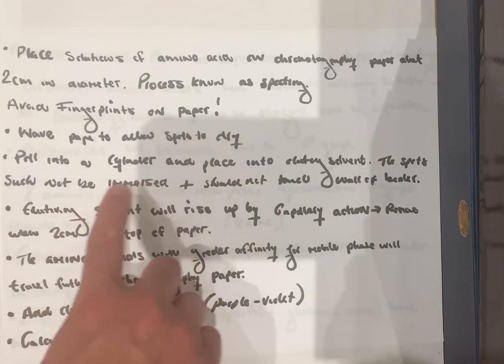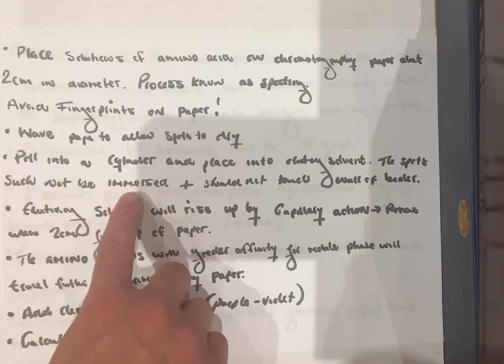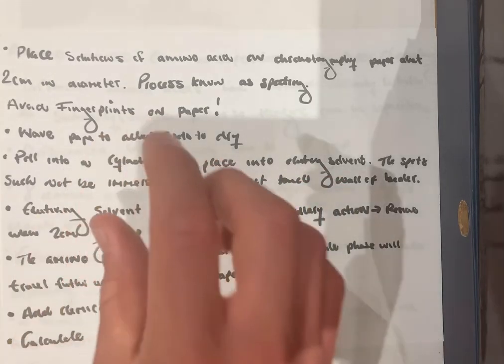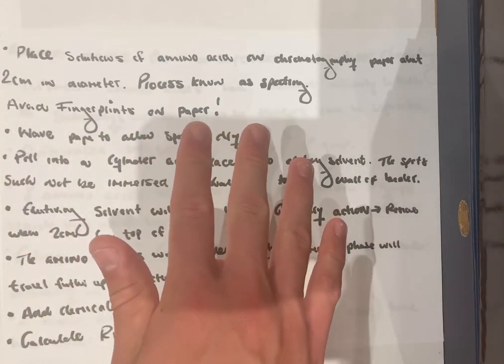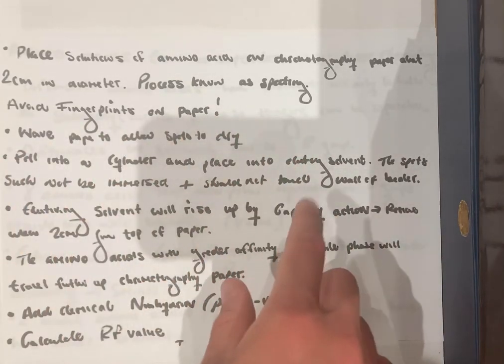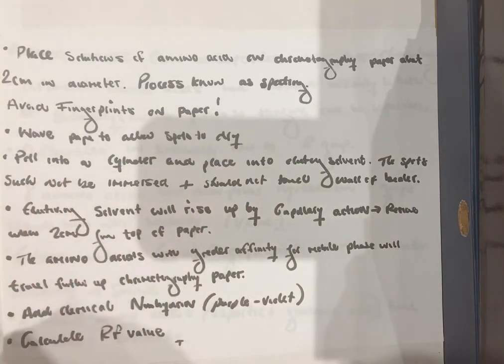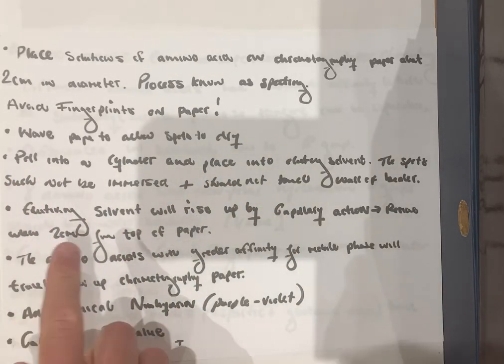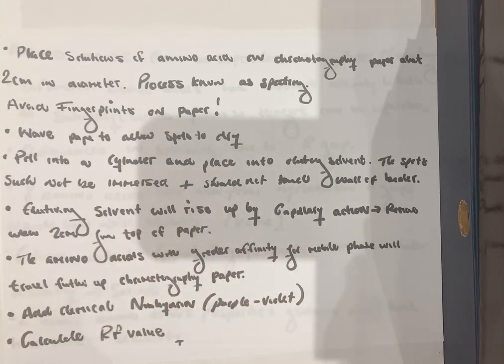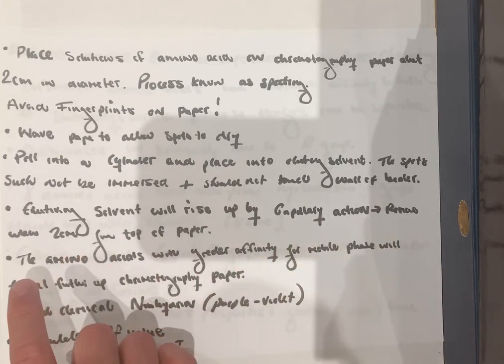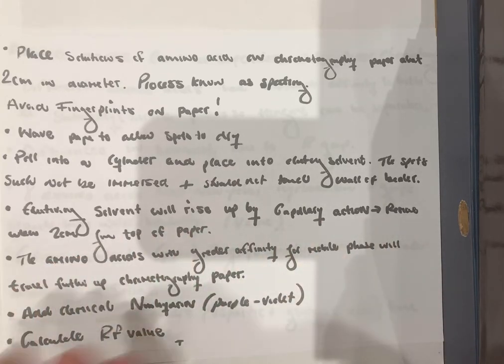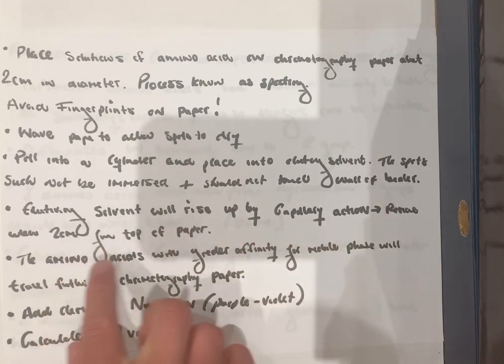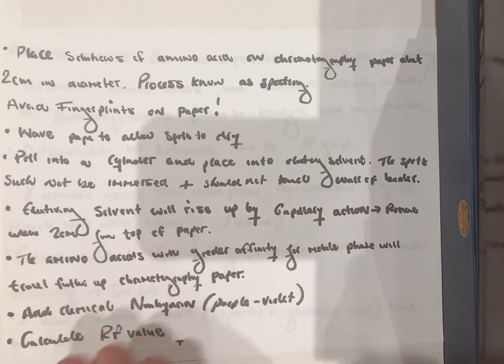Then you have to roll into a cylinder and place into a beaker with an eluting solvent. The paper and the spots should not be immersed and should not touch the walls of the beaker. The spots should be above the line of the eluting solvent. The eluting solvent will rise up the chromatography paper by capillary action. You need to remove the chromatography paper when the eluting solvent gets two centimeters from the top of the paper.